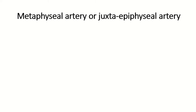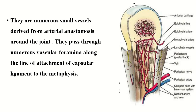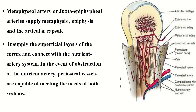The metaphyseal artery consists of numerous small vessels derived from the arterial anastomosis around the joint. They pass through numerous vascular foramina along the line of attachment of the capsular ligament to the metaphysis. The metaphyseal artery supplies the metaphysis, epiphysis, and articular capsule. It supplies the superficial layer of the cortex and communicates with the nutrient arterial system. In the event of obstruction of the nutrient artery, the periosteal artery is capable of meeting the needs of both systems.